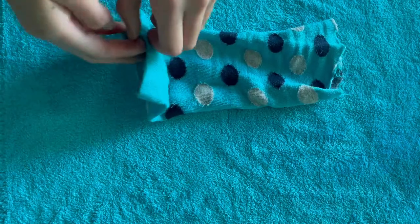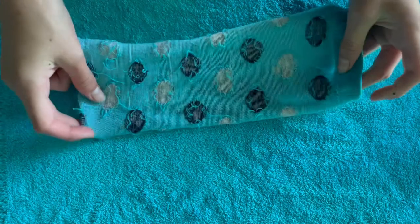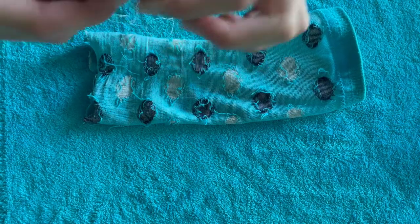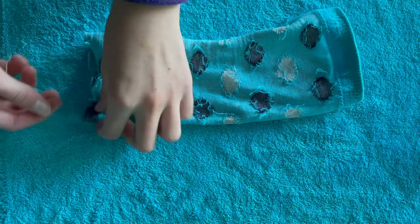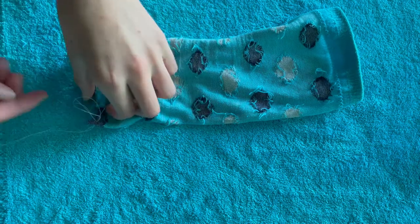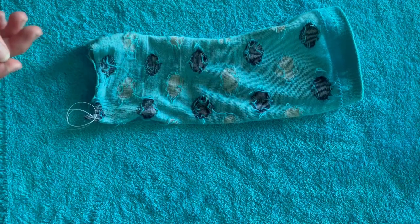Next we are going to flip the sock inside out and get our needle threaded. Then we are going to start sewing the bottom of your sleeping bag. Your sock completely sewed. We are going to flip it inside out again.